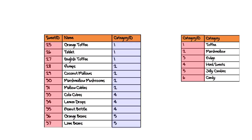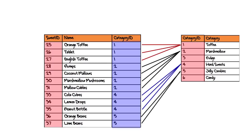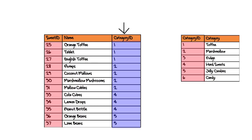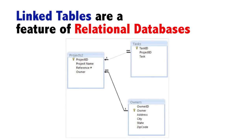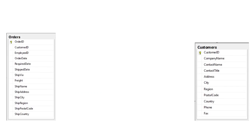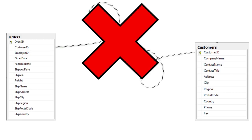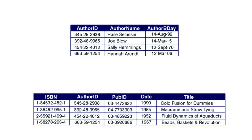The Category ID in the sweet table doesn't contain unique values. This special column is used to link the sweet and category tables together. The Category ID in the sweet table is still a key column, but we call this type of key a foreign key. Linked tables are a feature of what we call relational databases — databases that are made up of two or more linked tables. Remember, a link isn't a magic piece of string. The link between two tables exists when they have foreign key and primary key values that are the same. It is these equal values that create the link.